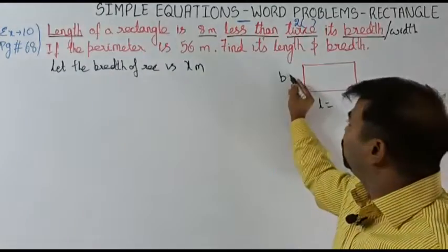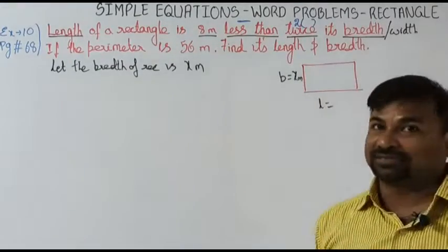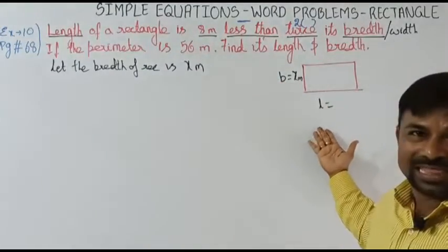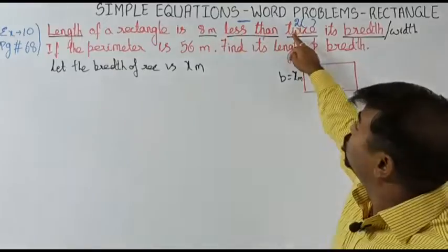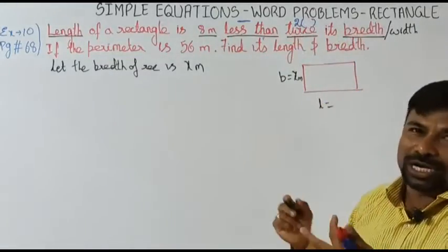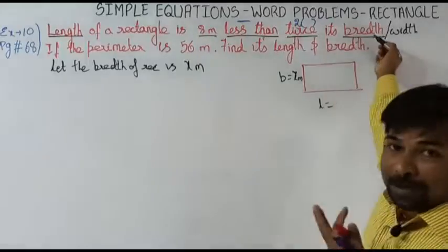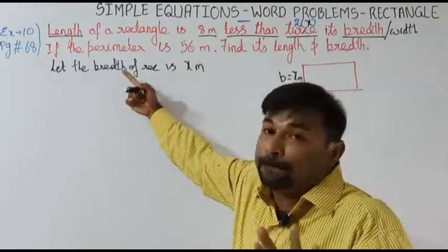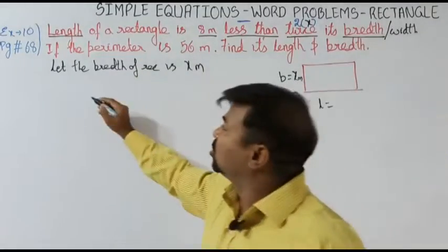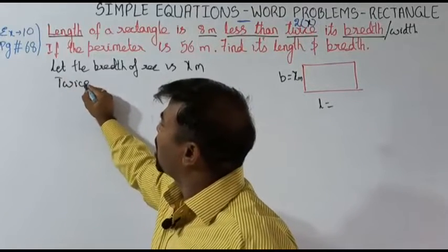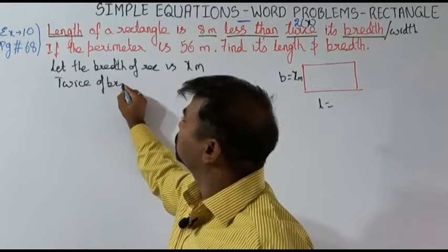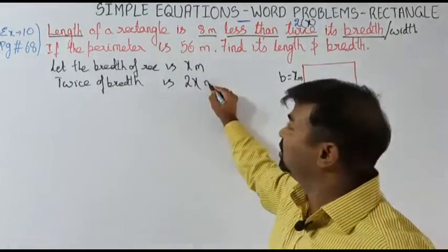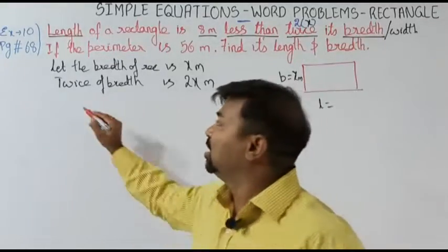We have chosen breadth as x meters, so breadth equals x meters. Now what is the length? Twice the breadth — twice of x — is 2x meters. So twice its breadth is 2x.